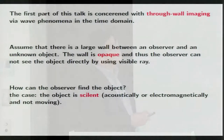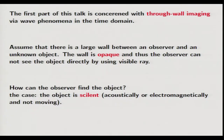The first part of this talk is concerned with through-wall imaging via wave phenomena in the time domain. Assume that there is a large wall between an observer and an object, and the wall has a very complicated structure. In addition, the wall is not transparent. We cannot see directly. The observer cannot see the object directly by using visible rays. How can the observer find the object? In particular, we are interested in the case where the object is silent — never makes any signal by itself.